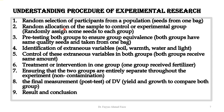Step three is pre-testing both groups to ensure group equivalence. This means we look carefully at both groups of seeds to ensure they have the same quality. Similarly, if we have participants, we test them to ensure that the abilities and qualities of individuals in both groups are at the same level before we go for the treatment.